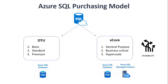Next, we look at the Azure SQL purchasing models. There are two models: DTU and vCore. DTU is only available on Azure SQL Database, while vCore is available on both SQL Database and Managed Instance. DTU has tiers: basic, standard, and premium. Basic is for small jobs or demos like this one. Standard is more of a general-purpose option, and premium is for applications that need more horsepower to run.